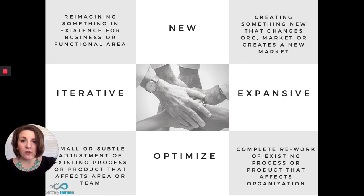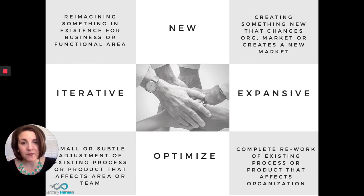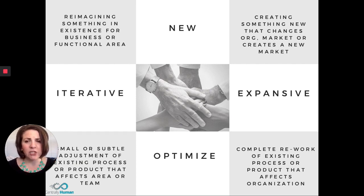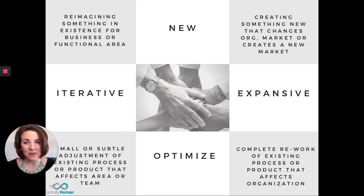On the vertical axis, it ranges from net new to optimized. New meaning never existed before; optimized meaning you're improving something that's already in existence. On the horizontal axis, you've got everything from expansive — it has a wide-ranging impact — to iterative. It's something small, but as we all know, a beach is nothing but millions and billions of little pieces of sand. Iterative innovations are really powerful.